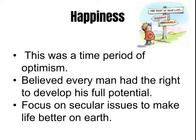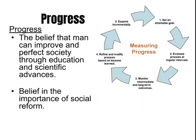Prior to this, most people would have said life on earth is short and what matters is the afterlife — heaven and hell — which is how the Church taught it. Enlightenment thinkers asked why we shouldn't have a great life on earth and looked for ways to make it better. This idea of progress — improving society through education and scientific advances — was really important, and they believed social reforms could make people's lives better.